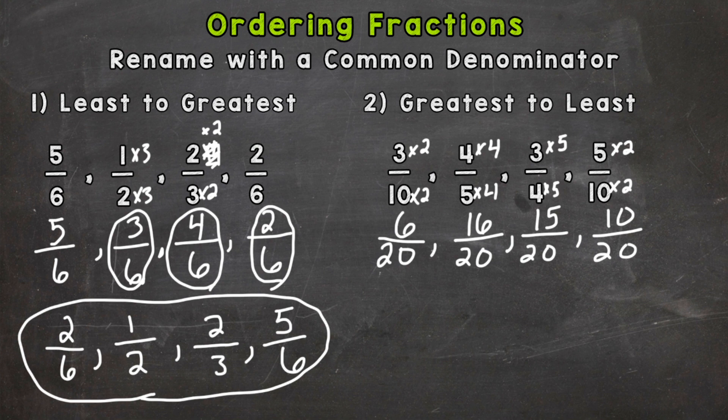So we need the greatest first. So we have 6 twentieths, 16 twentieths, 15, and 10. Well, 16 twentieths is the greatest. And I'm going to put the original fraction first, 4 fifths. Next would be 15 twentieths. And the original fraction is 3 fourths.